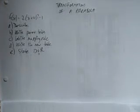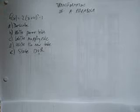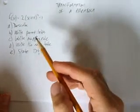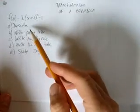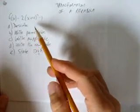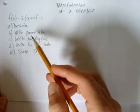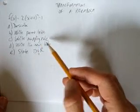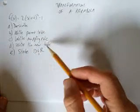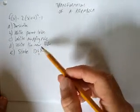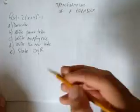Let's look at transformations of a parabola. This parabola is f(x) = 2(x + 4)² - 1. We're going to do five different pieces here to look at its transformation. First we'll describe the transformations using English words. Then we'll write the parent table. We'll look at the function's mapping rule. We'll use that mapping rule to write the function's table. And then we'll state the domain and range.